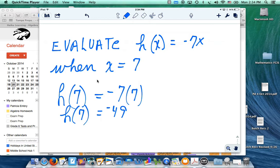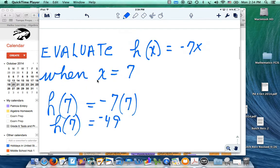Do you know what h of 0 would be? Right. It would be 0, because negative 7 times 0 is 0.